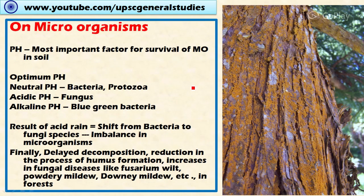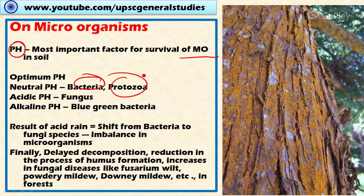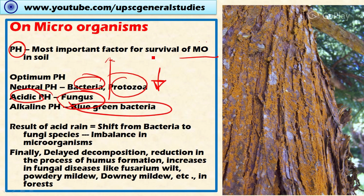Now let's look at the impact of acid rain on microorganisms. The pH of the soil plays an important role in the survival of microorganisms. At optimum neutral pH, the soil supports more bacteria and protozoa. If the soil becomes acidic, the bacteria and protozoa concentration is reduced and the fungus population increases. In alkaline pH, we find blue-green bacteria. The result of acid rain is a shift from bacteria and protozoa to the fungal class of microorganisms.